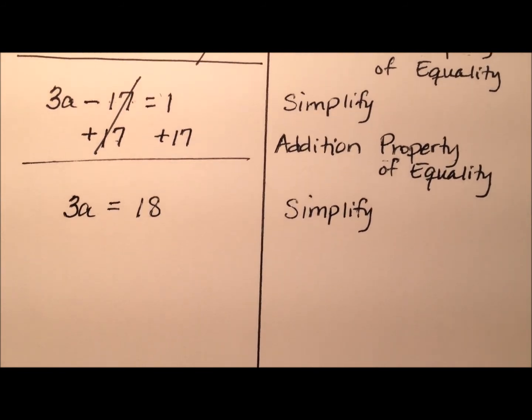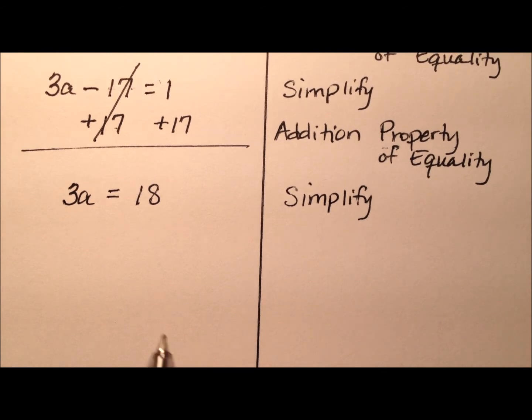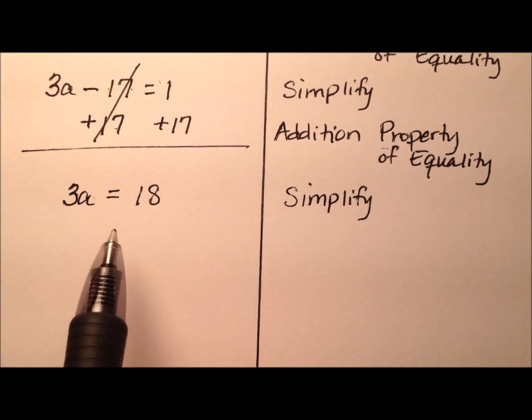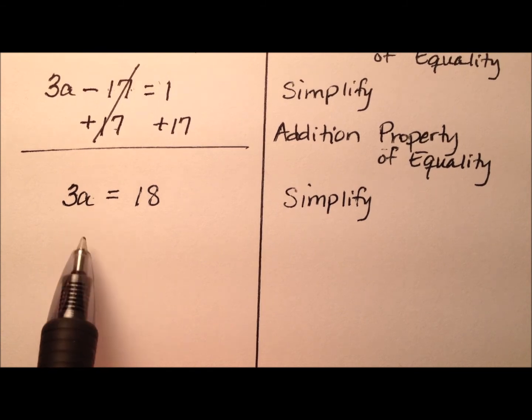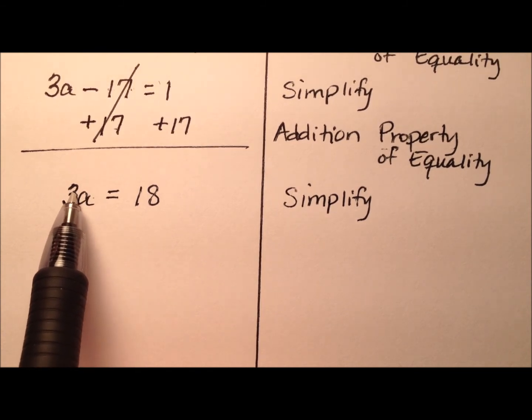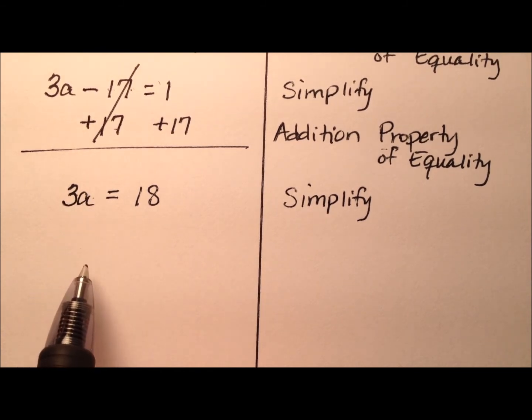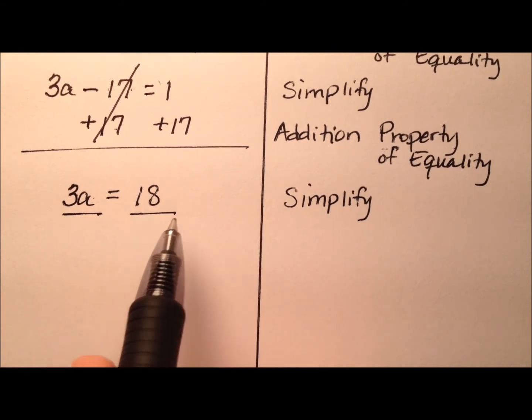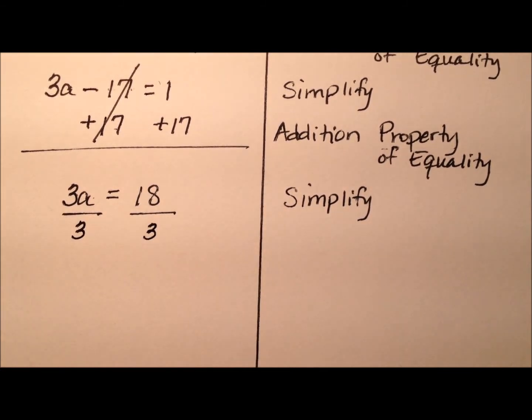So 3a equals 18. We're trying to get the a all by itself, and right now we have this 3 being multiplied by the a. So let's go ahead and divide both sides of our equation by 3.